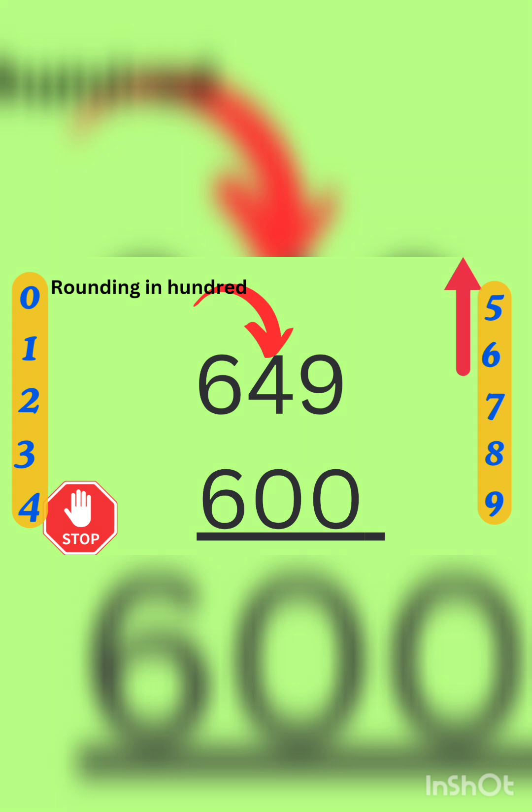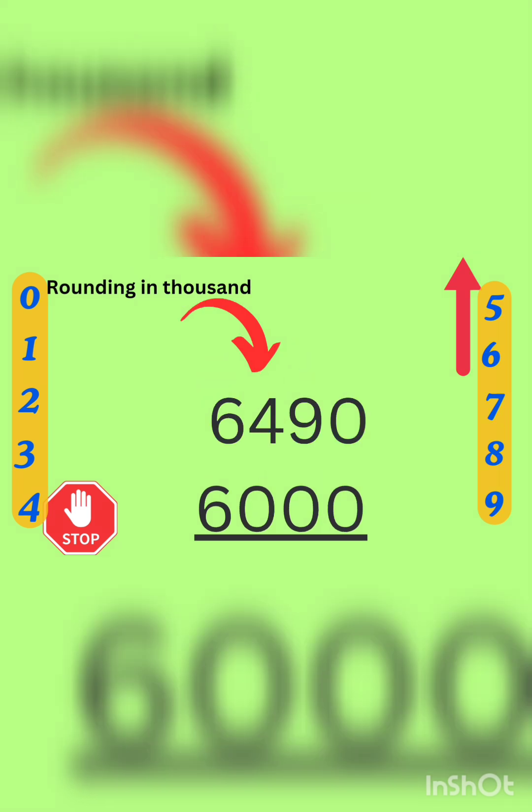But if we are rounding in hundreds, we will see what is given in tens place. It's 4, so 6 will stay the same, and we will write 600. The rule will be the same. If 0, 1, 2, 3, 4, stop the number. If it's 5, 6, 7, 8, 9, increase the number.